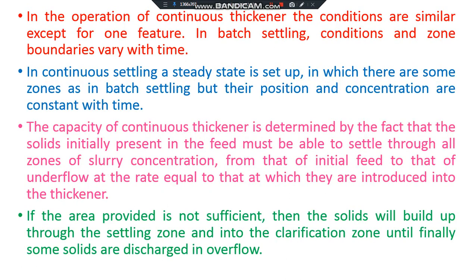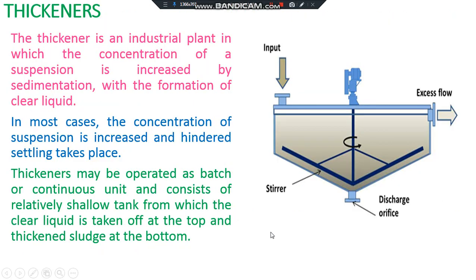This is an example of the batch thickener. In the batch thickener, we have a cylindrical vessel with a conical bottom. We take the feed slurry and allow it to settle for a certain period of time. After that time, from the bottom we take out the sediment or sludge — the collected solids — and from the top we take out the clear liquid. The thickener also has a stirrer, which moves very slowly and helps in the consolidation of the solid material.